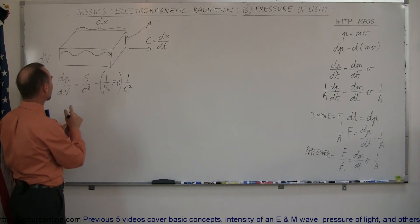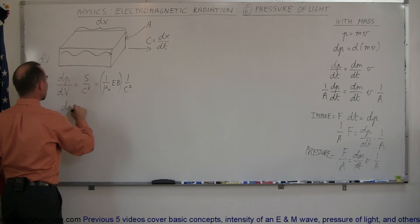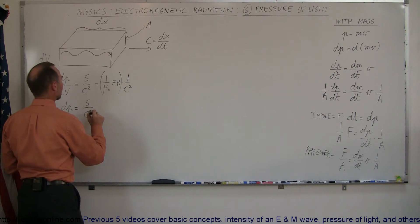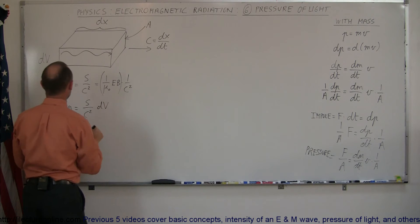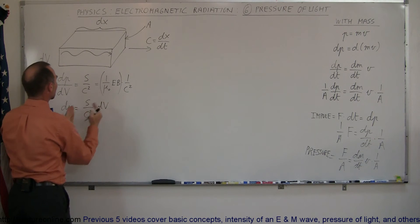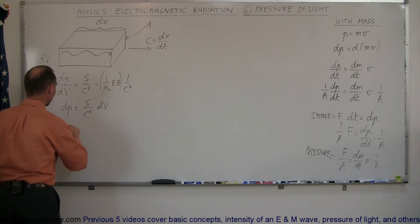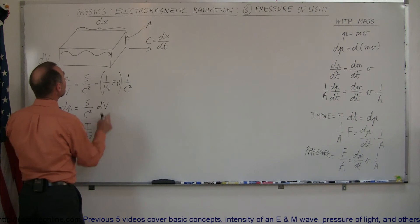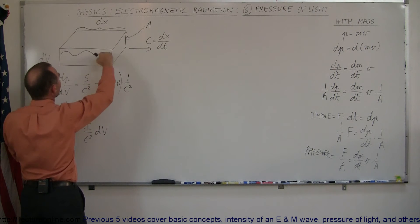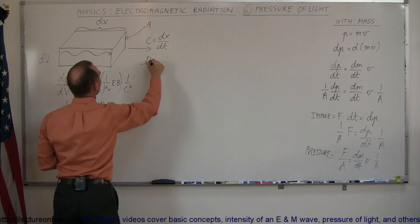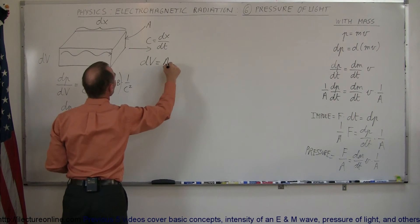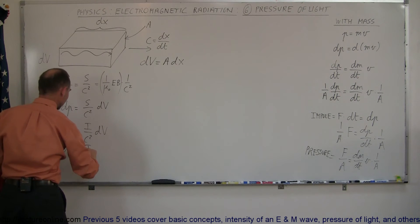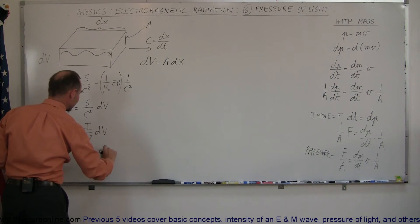So if we now multiply both sides of the equation by dv, we can say that dp is equal to S over c squared times dv, where S is simply the intensity of sunlight. So dp can be written as the intensity divided by c squared times dv. Now dv — in terms of what we have here — we have a certain volume called dv with sunlight contained within it. We can say that dv equals the cross-sectional area times dx, so it can be written as A times dx. So we're going to replace dv with A times dx: dp equals I divided by c squared times A times dx.